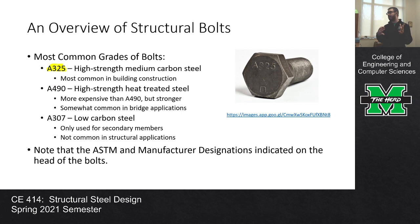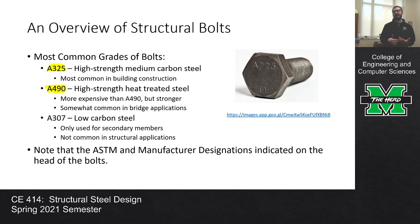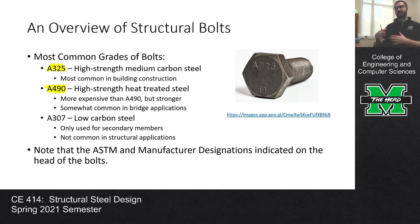The first is an A325 — the most common grade of structural bolt used in structural engineering, most common in building construction and also used quite a bit in bridges. The other very common bolt is an A490. The difference is that A490 bolts are a little more expensive but also stronger, so you pay more per bolt but don't need as many. A490 tends to be more common in bridge applications because bridges experience much heavier load demands.